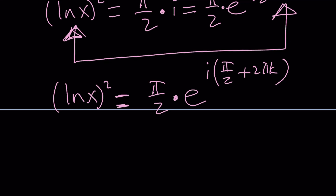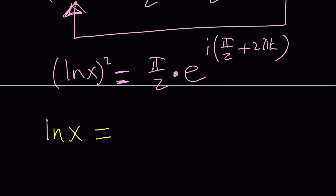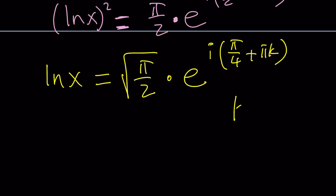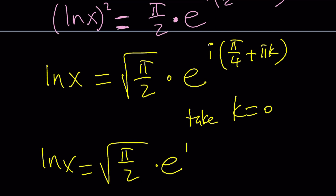I'm going to square root both sides. Consider the positive square root first, then we can look at the negative one. Square rooting means raising to the power of 1/2, which cuts the exponent in half. That gives us ln x equals the square root of π/2 times e to the power i·(π/4 + πk). Everything was divided by 2. Now with k equals 0, we get sqrt(π/2) times e to the power i·(π/4). It's a little simpler.